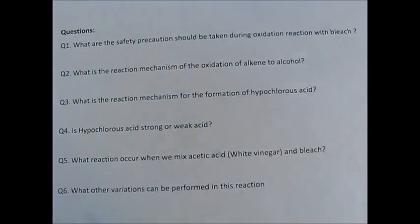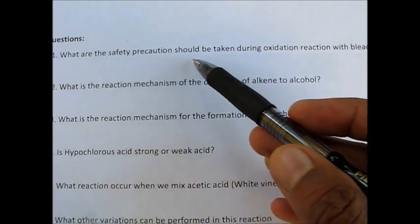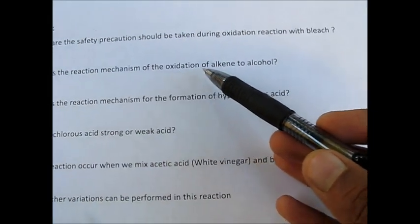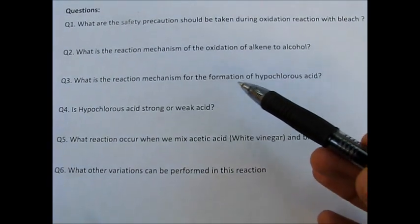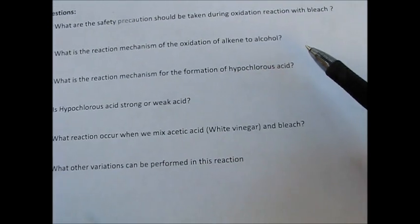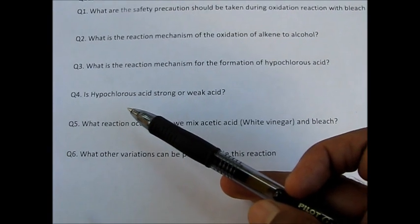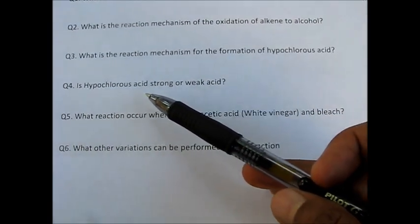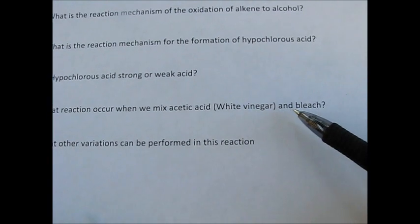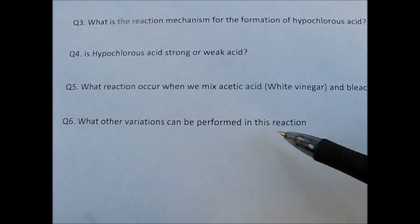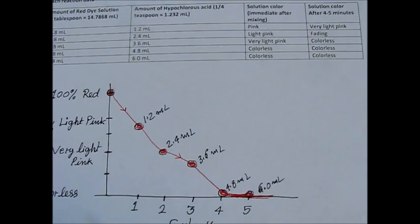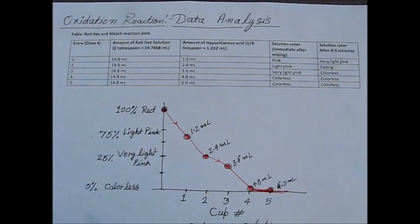Here are some questions to solve: What safety precautions should be taken during an oxidation reaction with bleach? What is the reaction mechanism for oxidation of alkene to alcohol? What is the reaction mechanism for the formation of hypochlorous acid using acetic acid and bleach? Is hypochlorous acid a strong or weak acid? What reaction occurs when we mix acetic acid and bleach? What other variations can be performed in this reaction? I hope you enjoyed this experiment — we tried to make it doable at home.